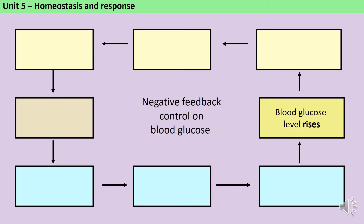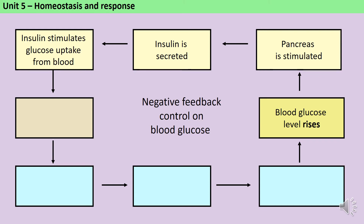When you have a meal, carbohydrates are broken down into smaller sugars such as glucose, which are absorbed in the small intestine into the bloodstream, and therefore blood sugar level rises. Receptor cells in the pancreas detect this change in blood sugar, and then glands in the pancreas secrete a hormone called insulin. Insulin travels in the blood around the body and binds to the membrane of other cells, increasing the rate at which they take up glucose, causing the blood glucose level to fall.